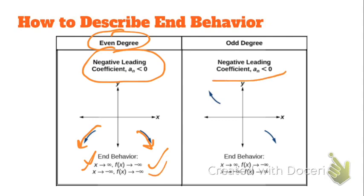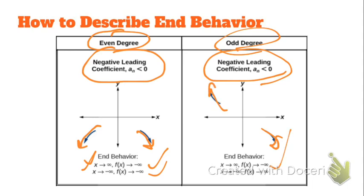Here is our last example. If the function has a negative leading coefficient — that's the number in front of the variable with the highest degree — the graph is going to be going down to the right. And if it's an odd degree, it's going to be going up to the left. Down here is how you would express that.